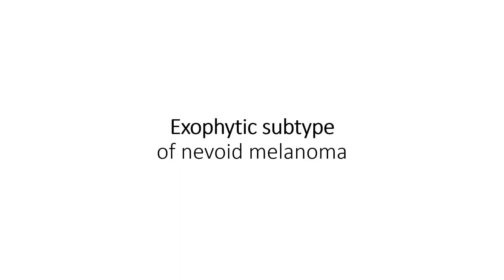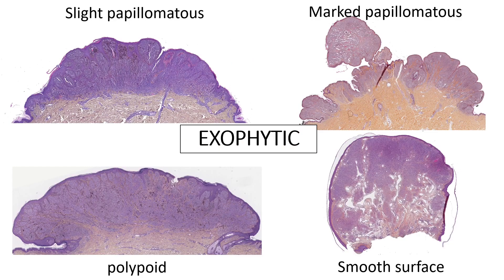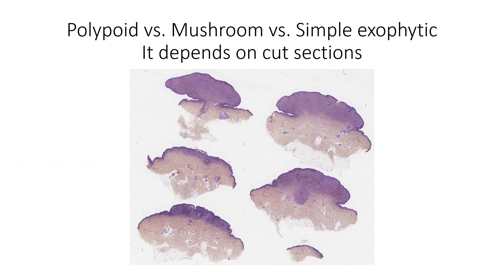Starting with the exophytic architecture at low power, it's not always papillomatous — it can be either slight or really marked. We can also have polypoid or smooth surface lesions. There's often an extension along the hair follicle that gives the lesion a mushroom shape. Here are some examples, and basically it depends on the sections — some areas will look more exophytic or mushroom-shaped.